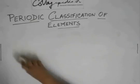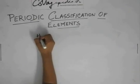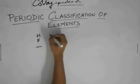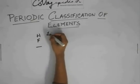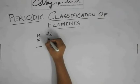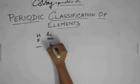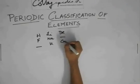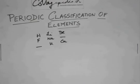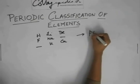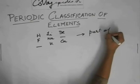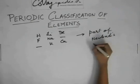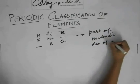So, they might ask you, they might give you a group. Hydrogen, fluorine, dash, lithium, sodium, potassium, beryllium, dash, calcium, like this, suppose. This is a part of Newland's law of octaves.